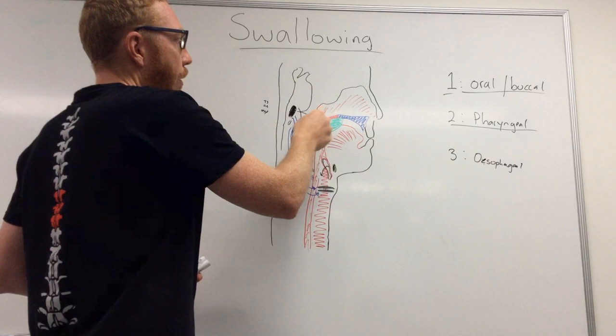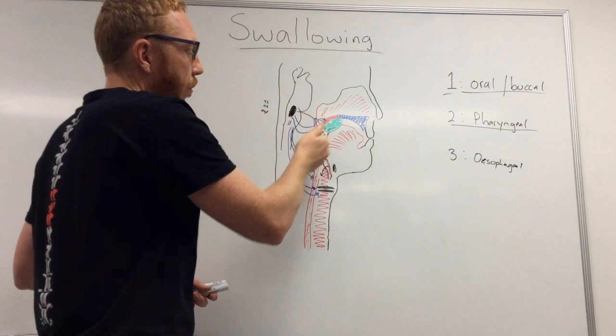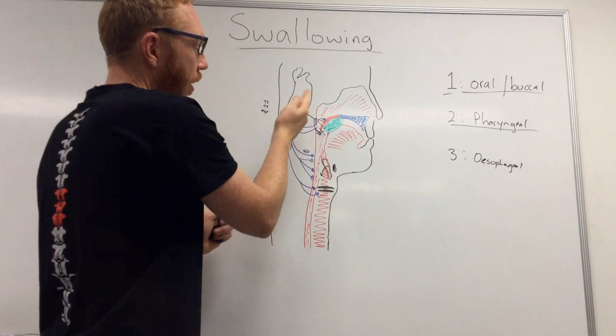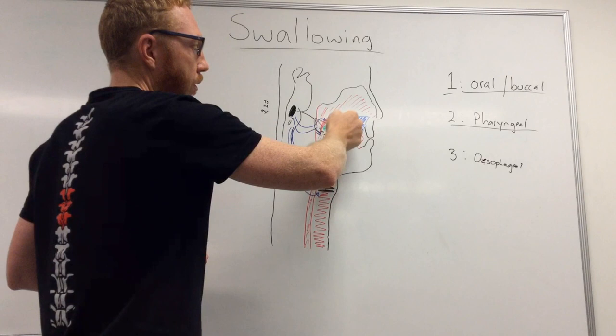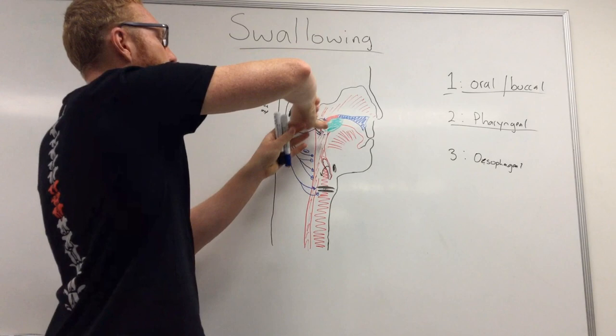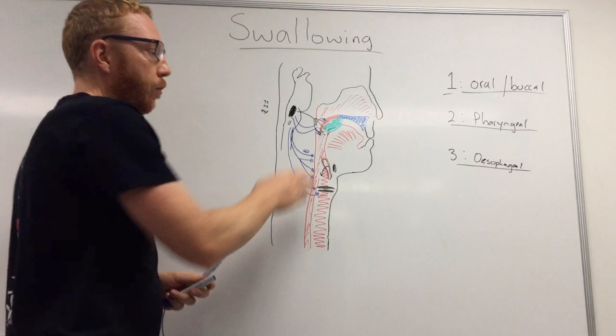To summarize the pharyngeal phase: we receive the afferent signal back at the brainstem, then motor signals go to the soft palate, the palatopharyngeal arch, then down to the larynx to bring it up, the epiglottis comes over, the esophagus starts to open, the sphincter opens, and the bolus enters the upper esophagus — initiating a wave that pushes it into the esophageal phase.